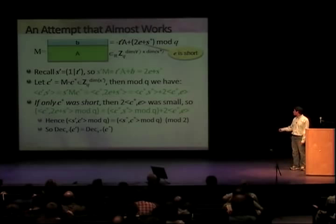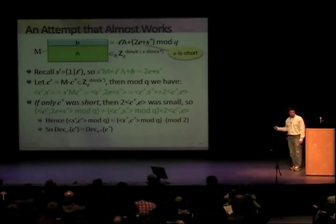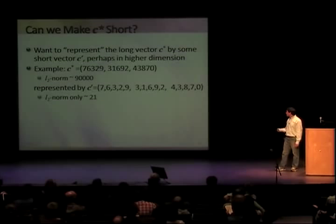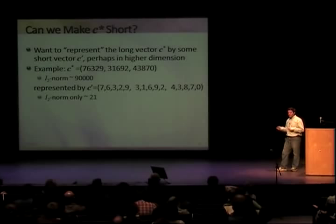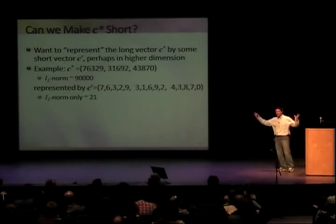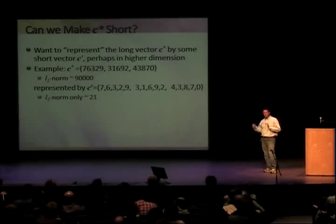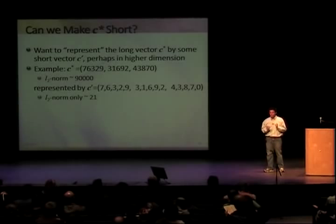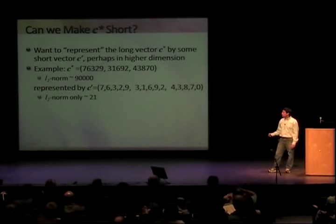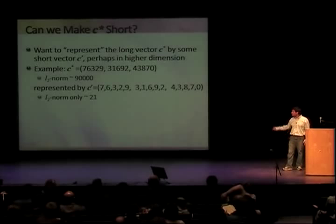If only C* were short, then everything would be small over the integers and we could take mod 2. So we need to fix this. We have a vector C* with high L2 norm and we want to represent it with low L2 norm. Here's one way: write down the digits. For example, this gives a higher-dimension but much lower L2 norm representation. We'll use binary rather than decimal because it works better. These vectors are linearly related: you can take the entries and multiply by corresponding powers of two to recover the original vector.